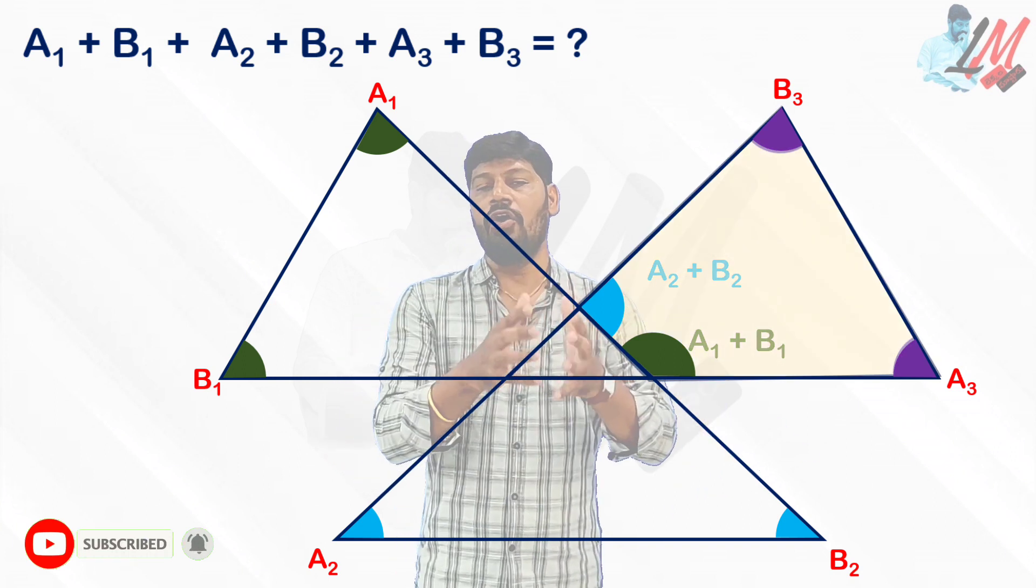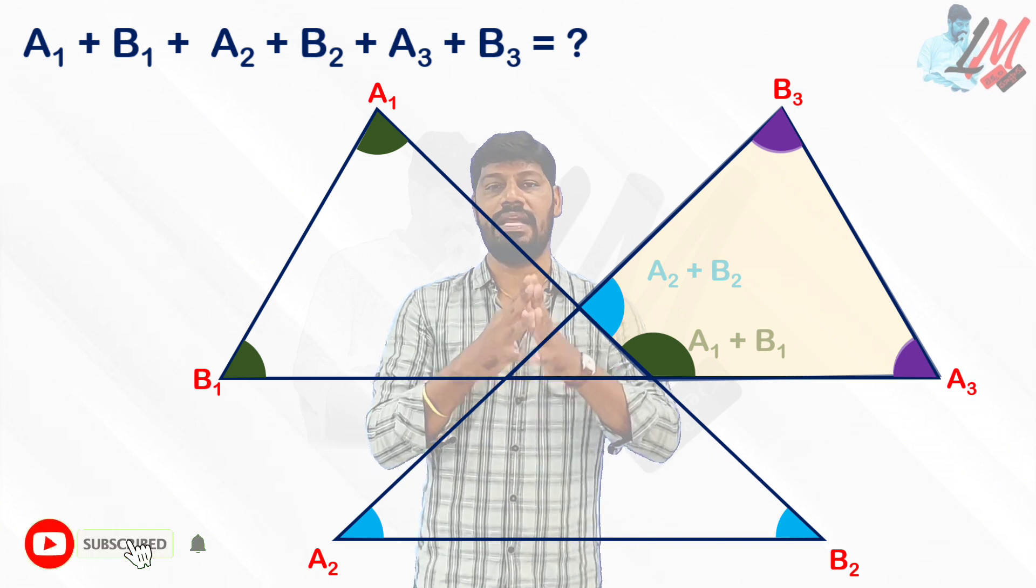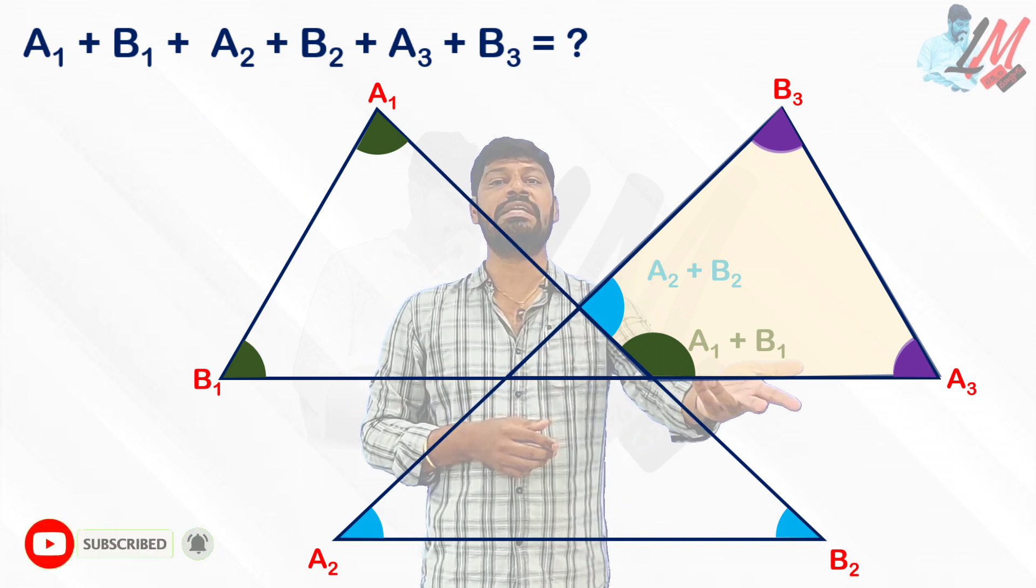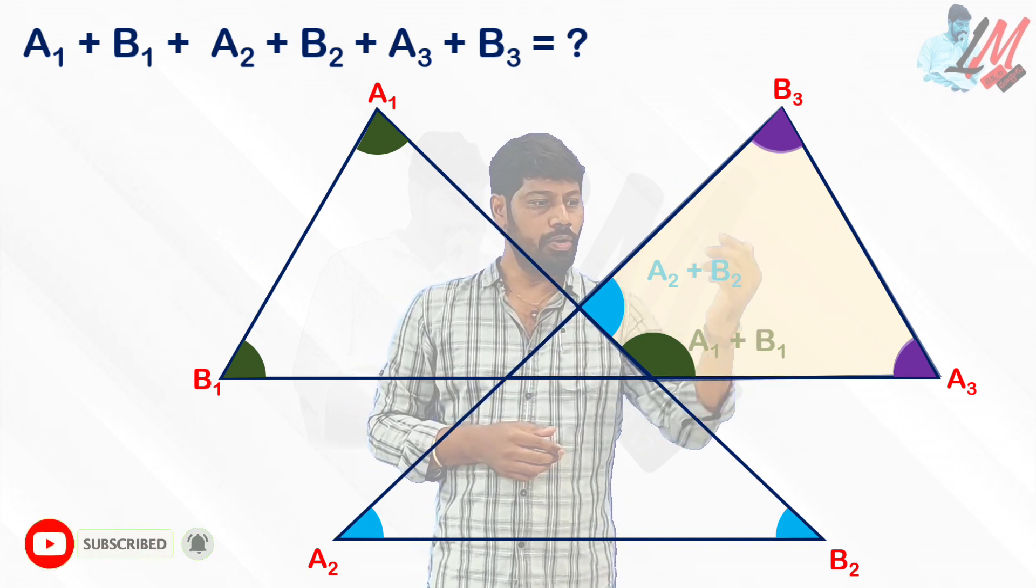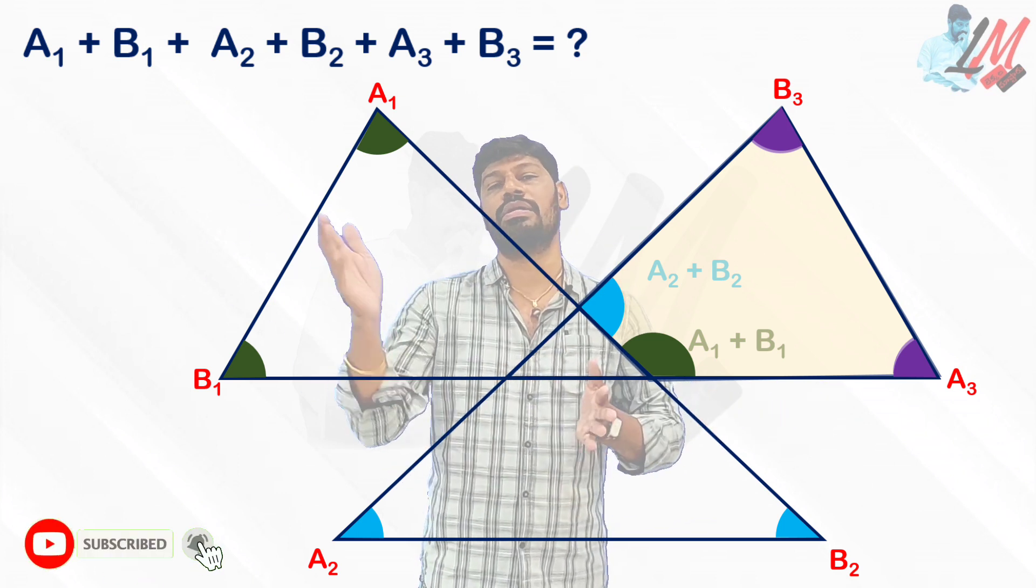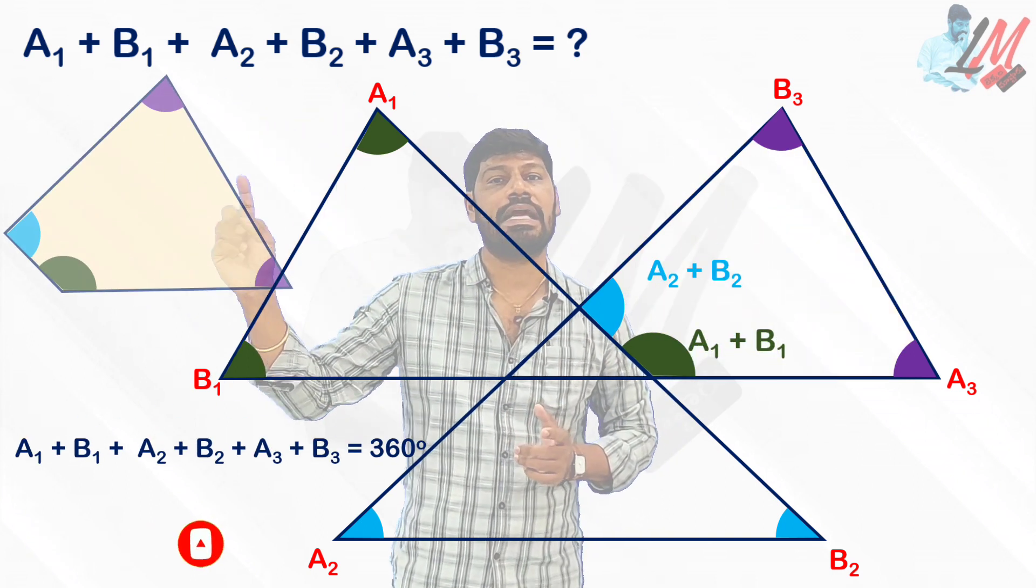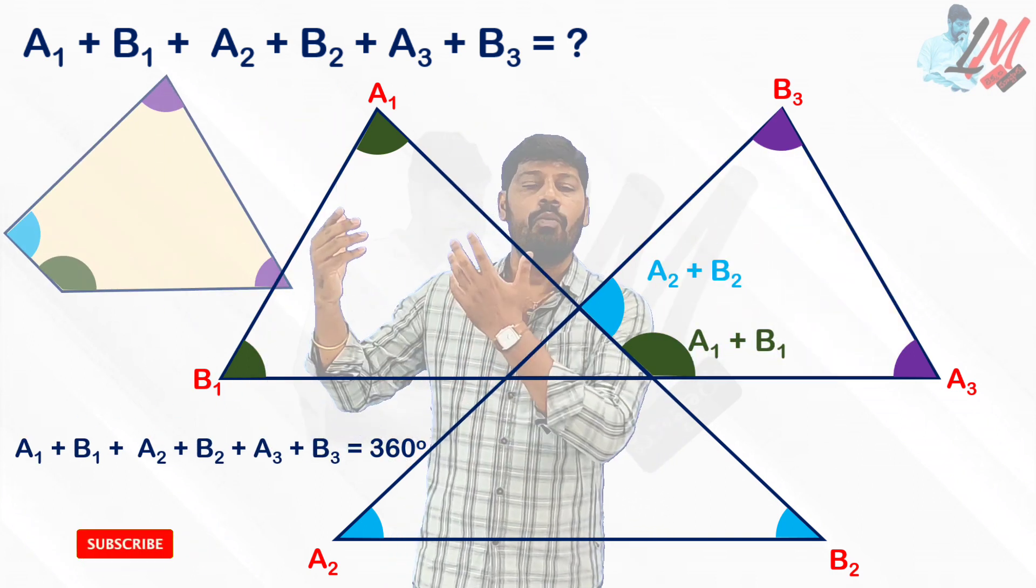We know that the sum of interior angles of any quadrilateral is always 360 degrees. What are the interior angles here? A2 and B2, and the remaining two angles are the sum of interior angles of the other two triangles. So simply you can say in this quadrilateral, sum of all interior angles equals 360.